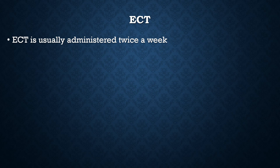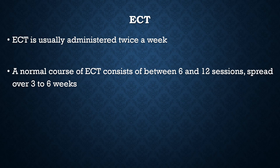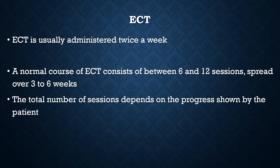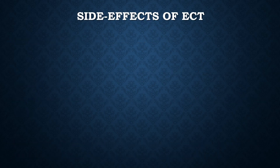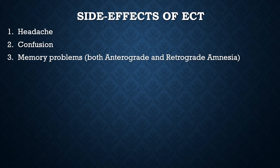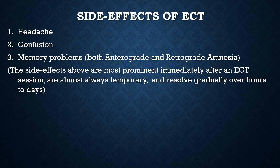ECT is usually administered twice a week. A normal course consists of between 6 and 12 sessions spread over 3 to 6 weeks, with the total number depending on the patient's progress. Patients usually demonstrate some improvement after the second or third session, which then increases with subsequent sessions. Side effects include headache, confusion, and memory problems — both anterograde and retrograde amnesia. These are most prominent immediately after a session but are almost always temporary, dissolving gradually over hours to days.